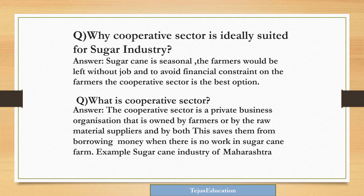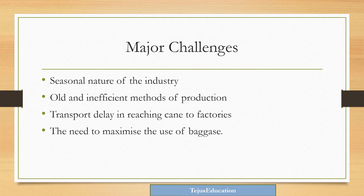Why is the cooperative sector ideally suited for the sugar industry? Sugarcane is seasonal, so farmers would be left without jobs during off-seasons. To avoid financial constraints on the farmers, the cooperative sector is the best option.